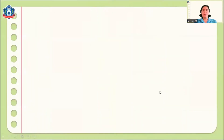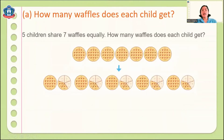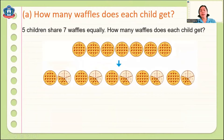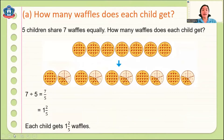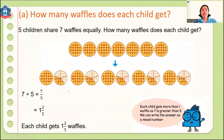Here is another problem: How many waffles does each child get? Five children will share 7 waffles equally. Seven waffles divided by 5 equals seven-fifths. We can change this improper fraction into a mixed number, which is 1 and 2/5. So each child will get 1 and 2/5 waffles. This is how to use fractions and division.